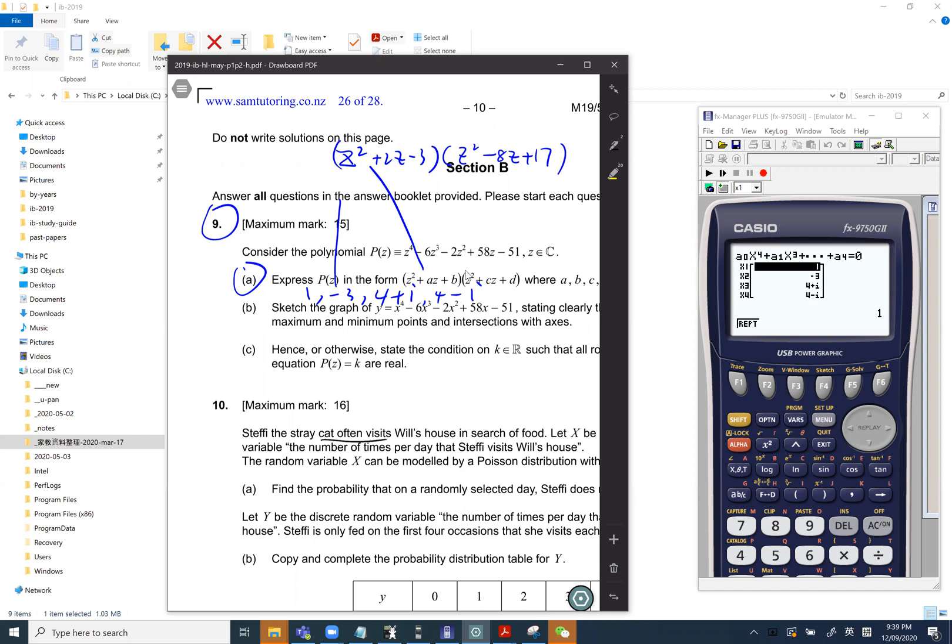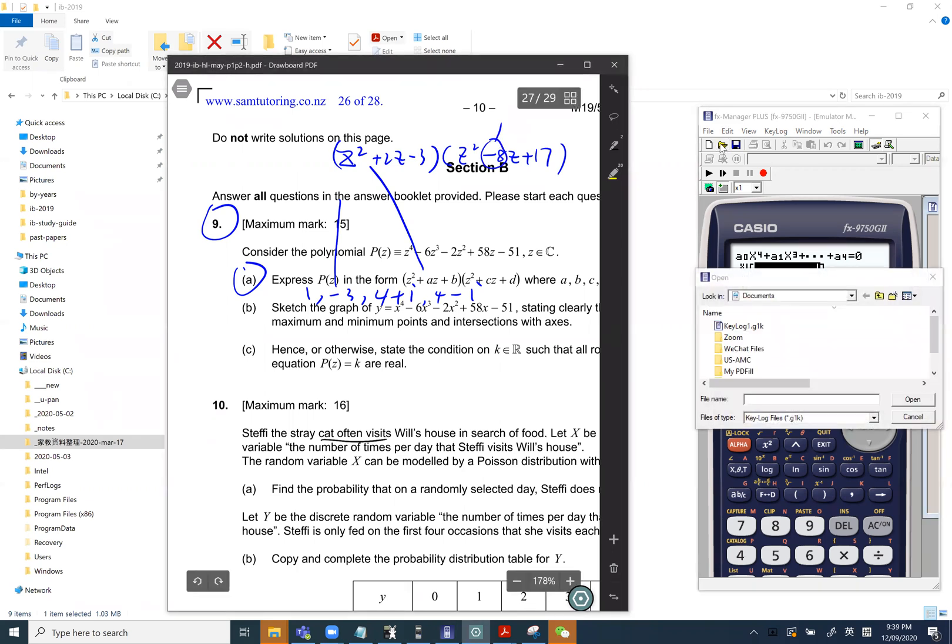So this number here is negative alpha plus beta. This is alpha times beta. Two roots are here, two roots are here. Yeah, that's the question.